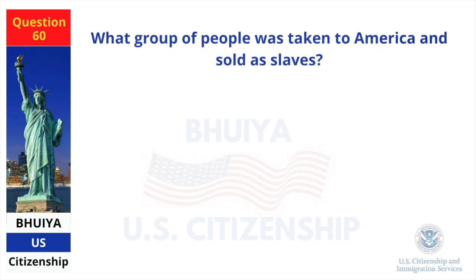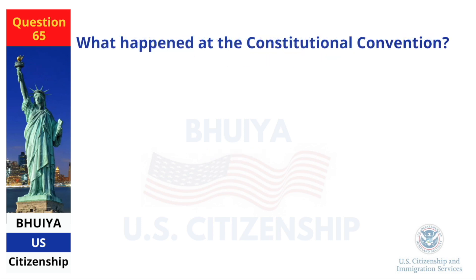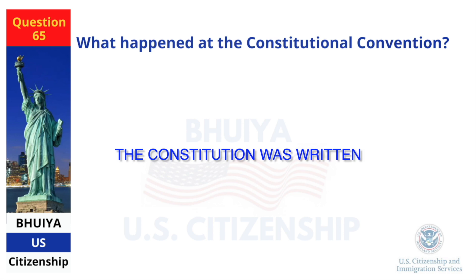What group of people was taken to America and sold as slaves? Africans. What happened at the Constitutional Convention? The Constitution was written.